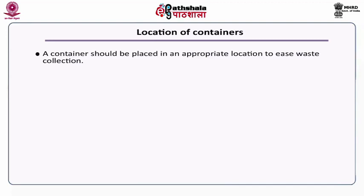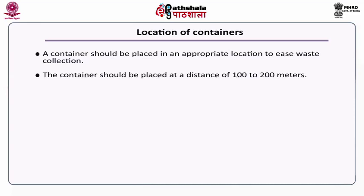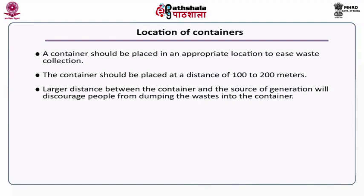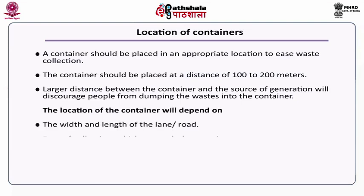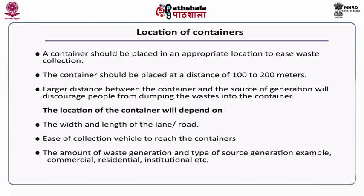Now let us discuss about the location of containers — where actually these storage containers should be placed. A container should be placed at a distance of 100 to 200 meters. The larger the distance between the container and the source of generation, the more it will discourage people from dumping waste into the container. The location of the container will also depend on the width and length of the lane or road, the ease of access for collection vehicles, the amount of waste generation, and the type of source — commercial, residential, institutional — as well as traffic congestion.